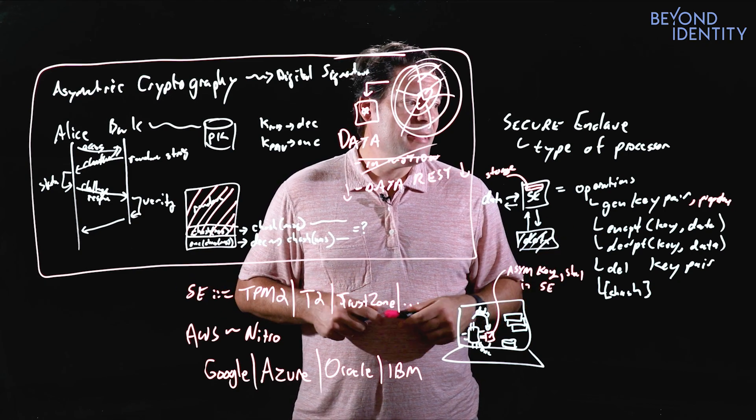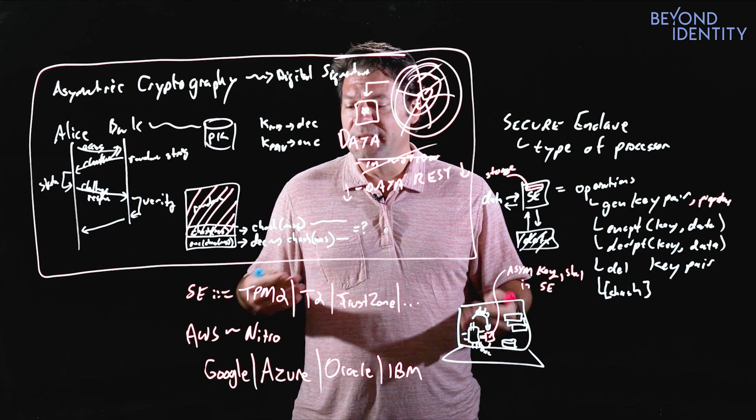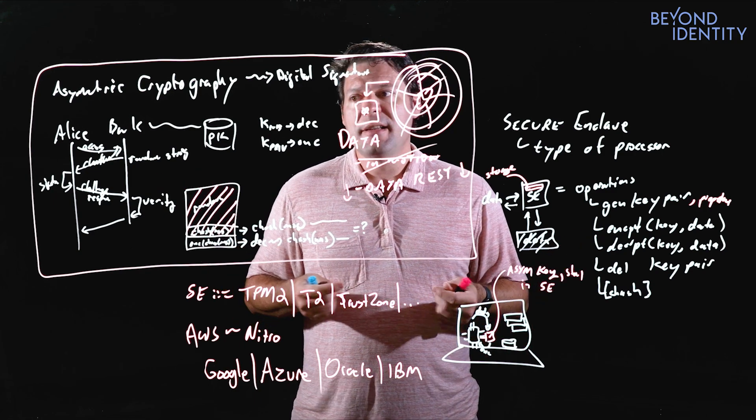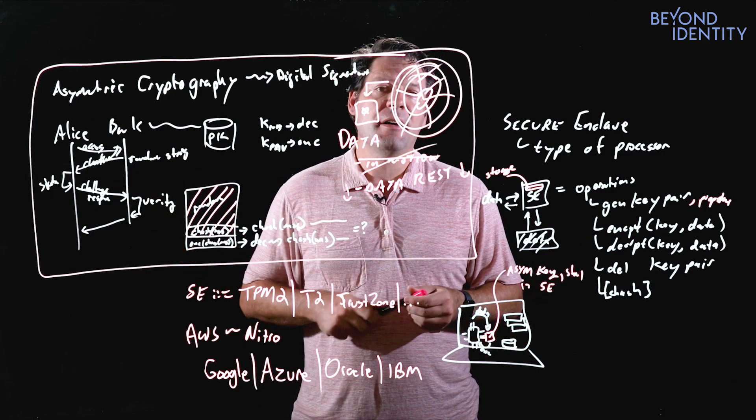So in the next section, we're going to keep building up our example using asymmetric crypto and enclaves to actually work it into a more realistic authentication.